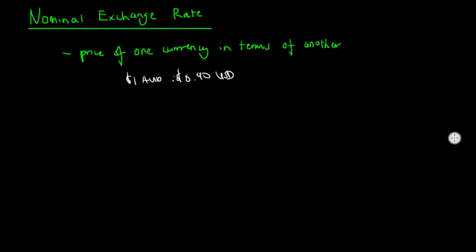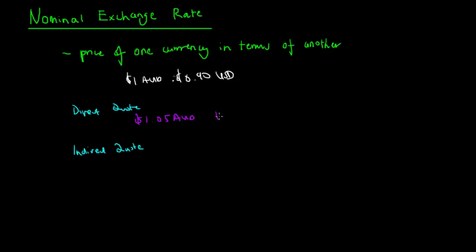The nominal exchange rate can be written in two ways: firstly as a direct quote, or as an indirect quote. A direct quote is how much of the domestic currency is required to purchase one unit of the foreign currency. For example, we need $1.05 AUD to buy one US dollar — this is an example of a direct quote.